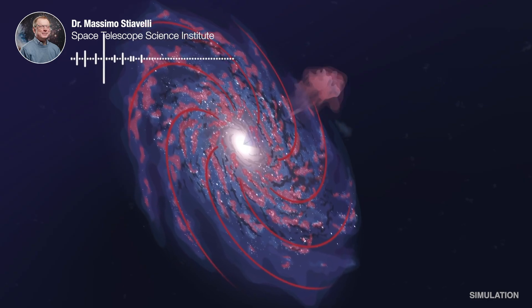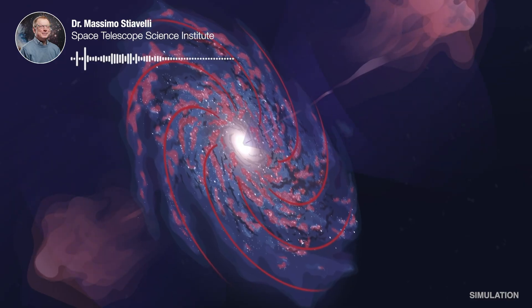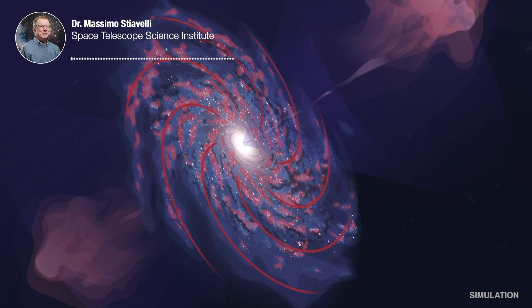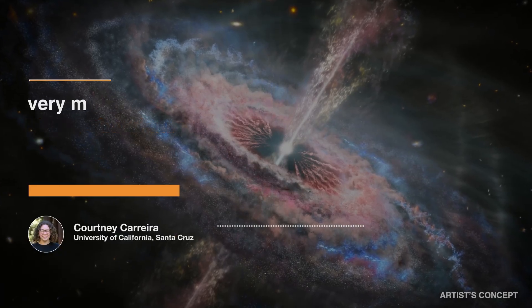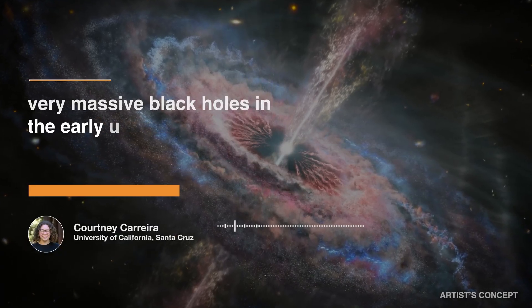Also, how can you make a black hole that is so massive compared to the galaxy? There's just a higher abundance of very massive black holes in the early universe.